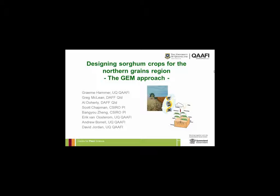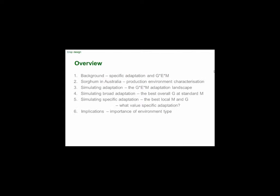The focus is very much around water and abiotic stress — it's the major limiting factor for a dryland crop like sorghum. There are many others but I'm not going to cover nutrients or diseases. I want to cover six things: a little bit about specific adaptation and the G by E by M concept.